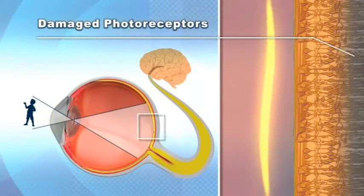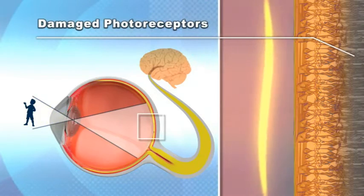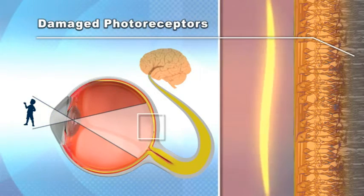Degeneration of photoreceptors prevents the brain from receiving signals from the eyes, resulting in blindness.